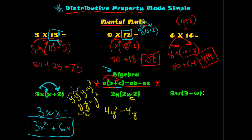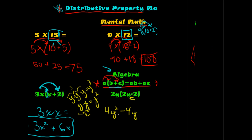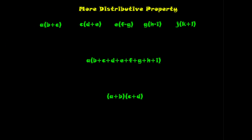Next: 3w times (3 plus w). Just because the variable switched place, don't let it confuse you — it works the same way. 3w times 3: 3 times 3 is 9, and we have one w, so that's 9w. Then 3w times w: 3 times 1 is 3, and w times w is w squared. So the answer is 9w plus 3w squared.